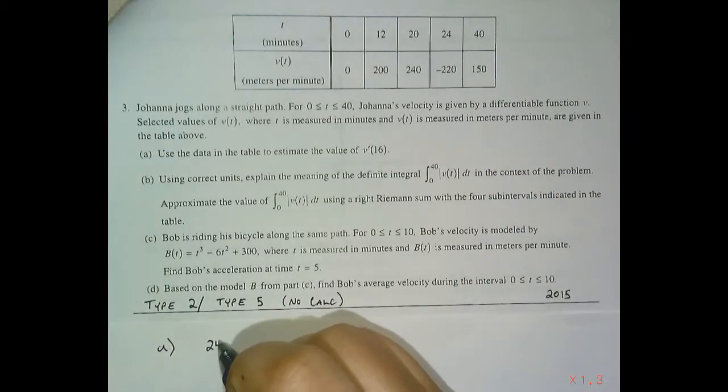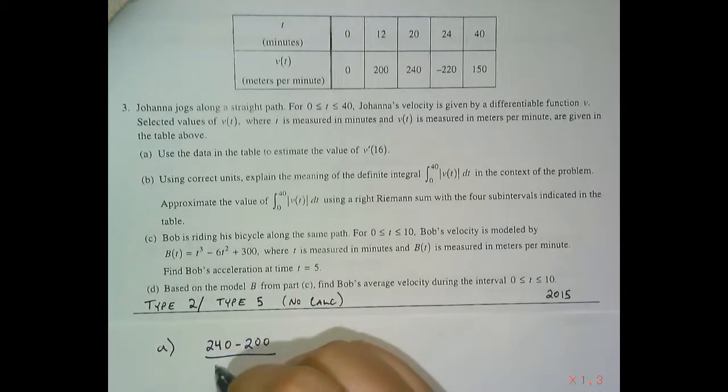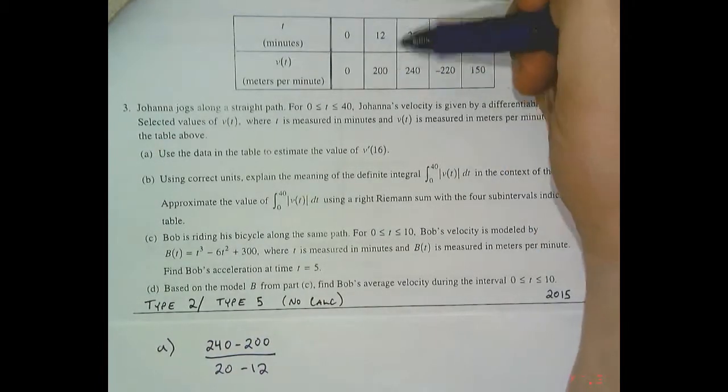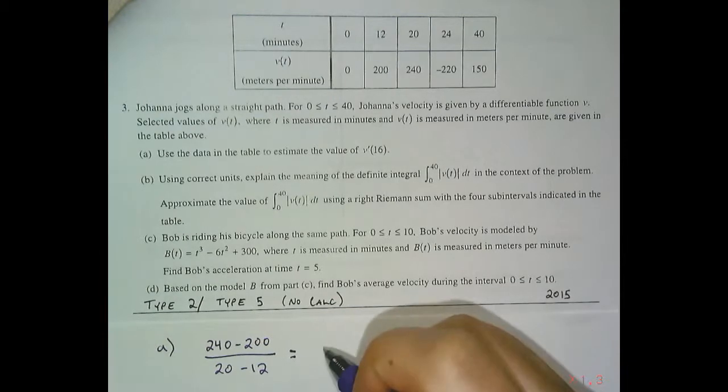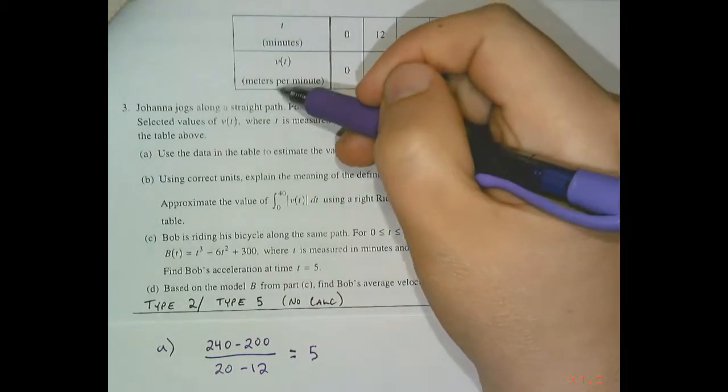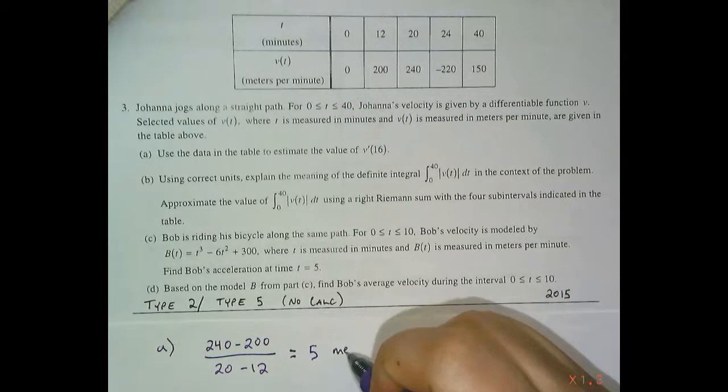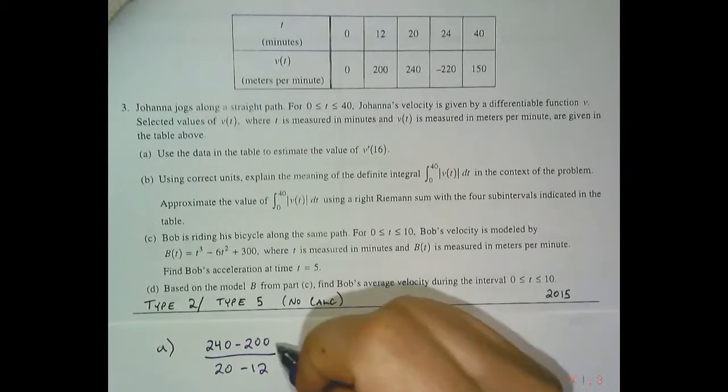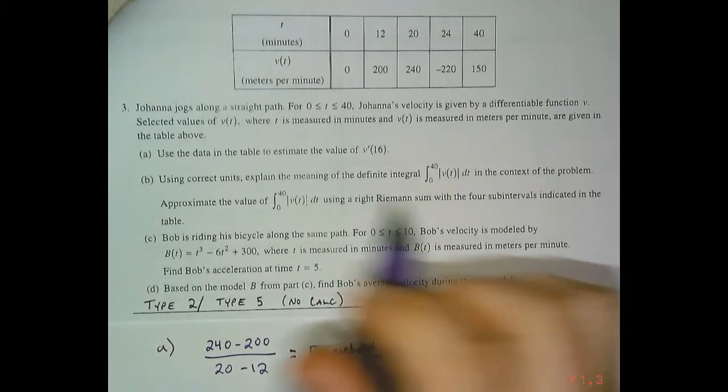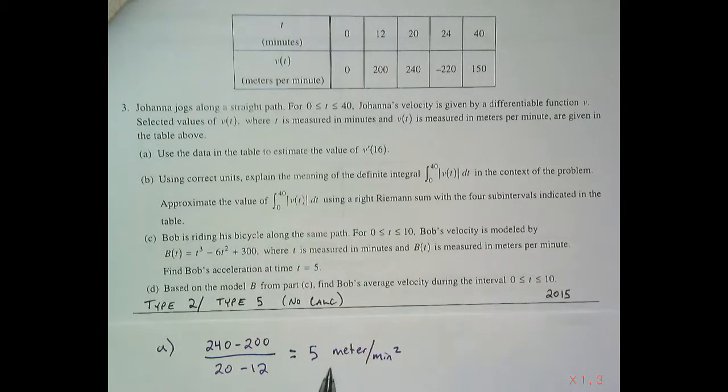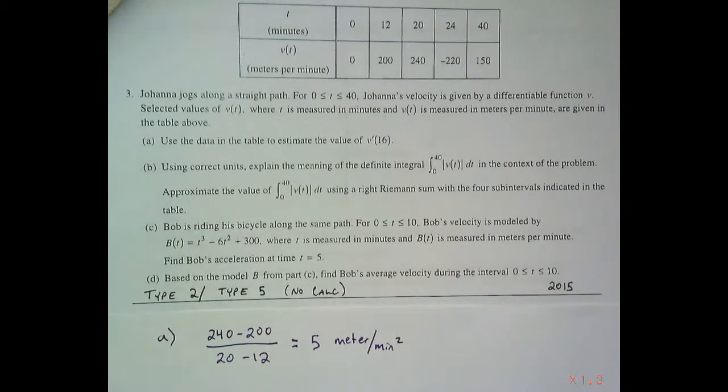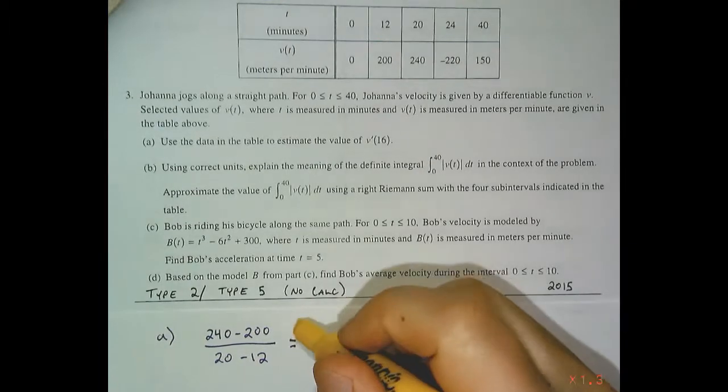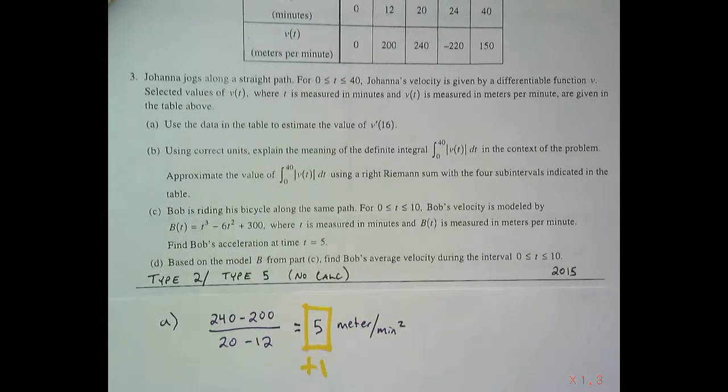So the average rate of change of velocity, we use the two closest points to 16, equals 5. And our unit here in the table for velocity is meters per minute, and because we're doing an average rate of change of velocity it's going to be meters per minute squared. Now they didn't ask for the unit on that, so it's okay if you don't have the unit, but you have to show the difference quotient. So that difference quotient supports the work, but it is only one point for having the correct answer of five. Remember no floating answers, you can't just say five, you have to have the work that supports that answer.